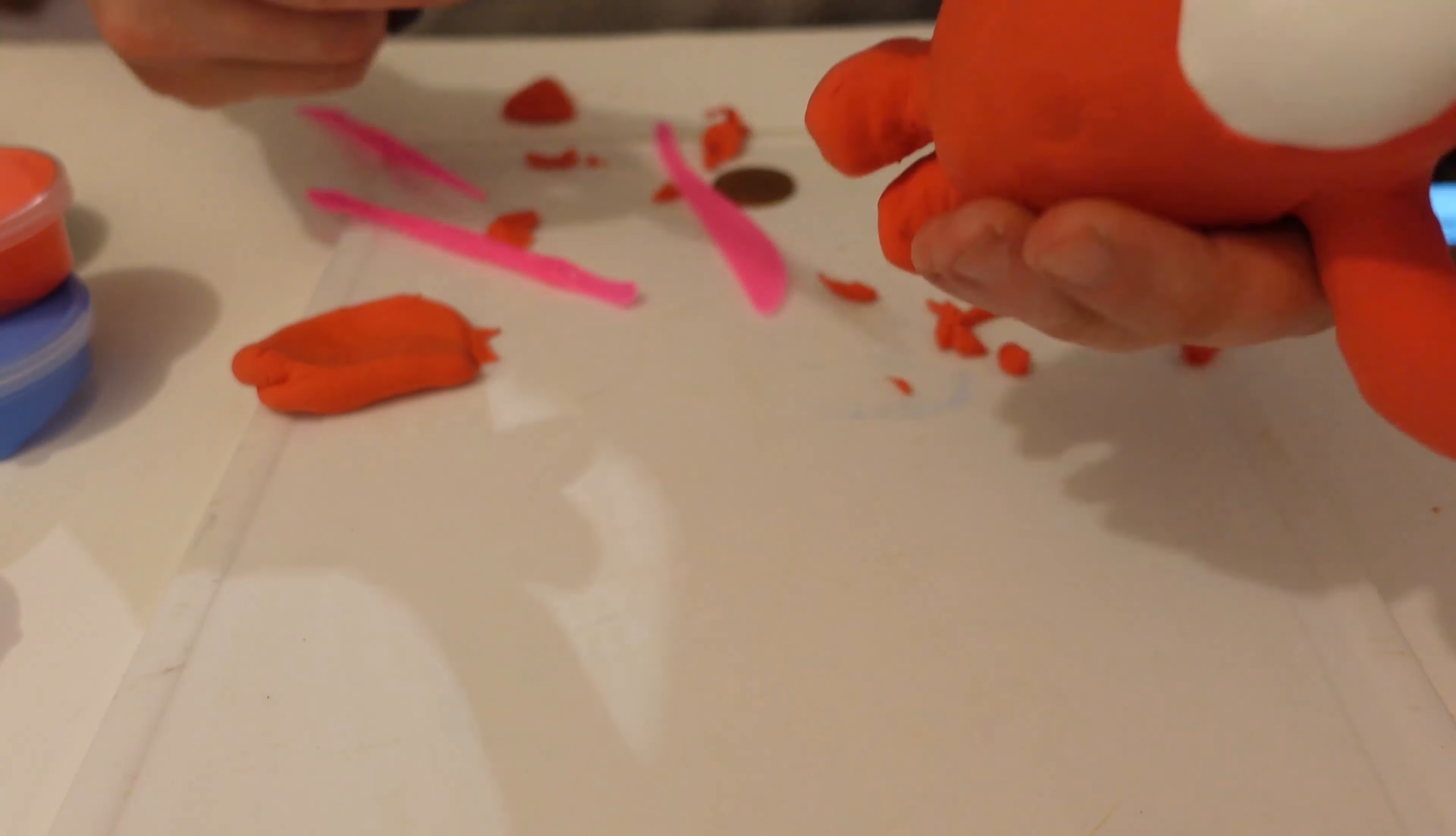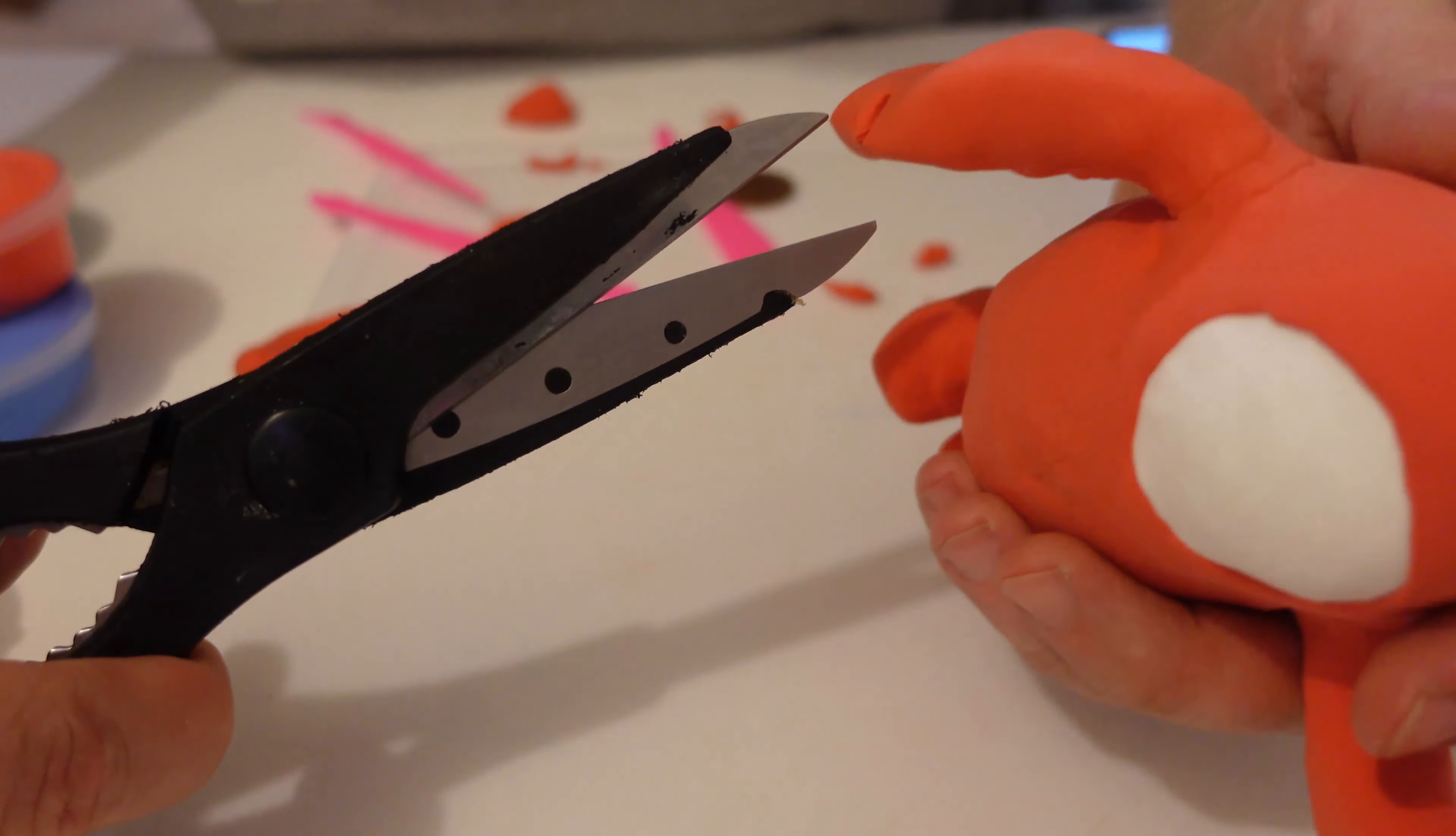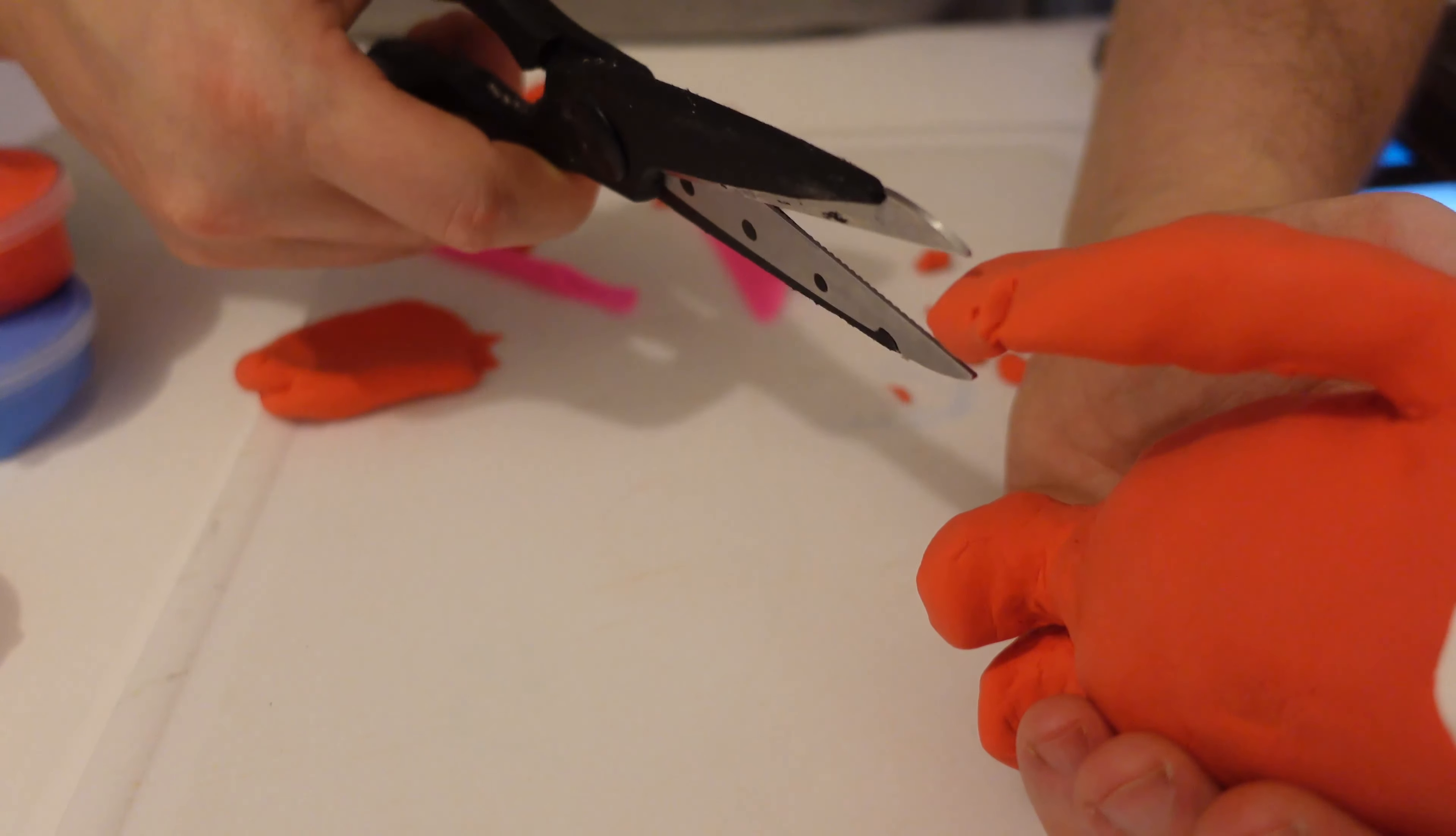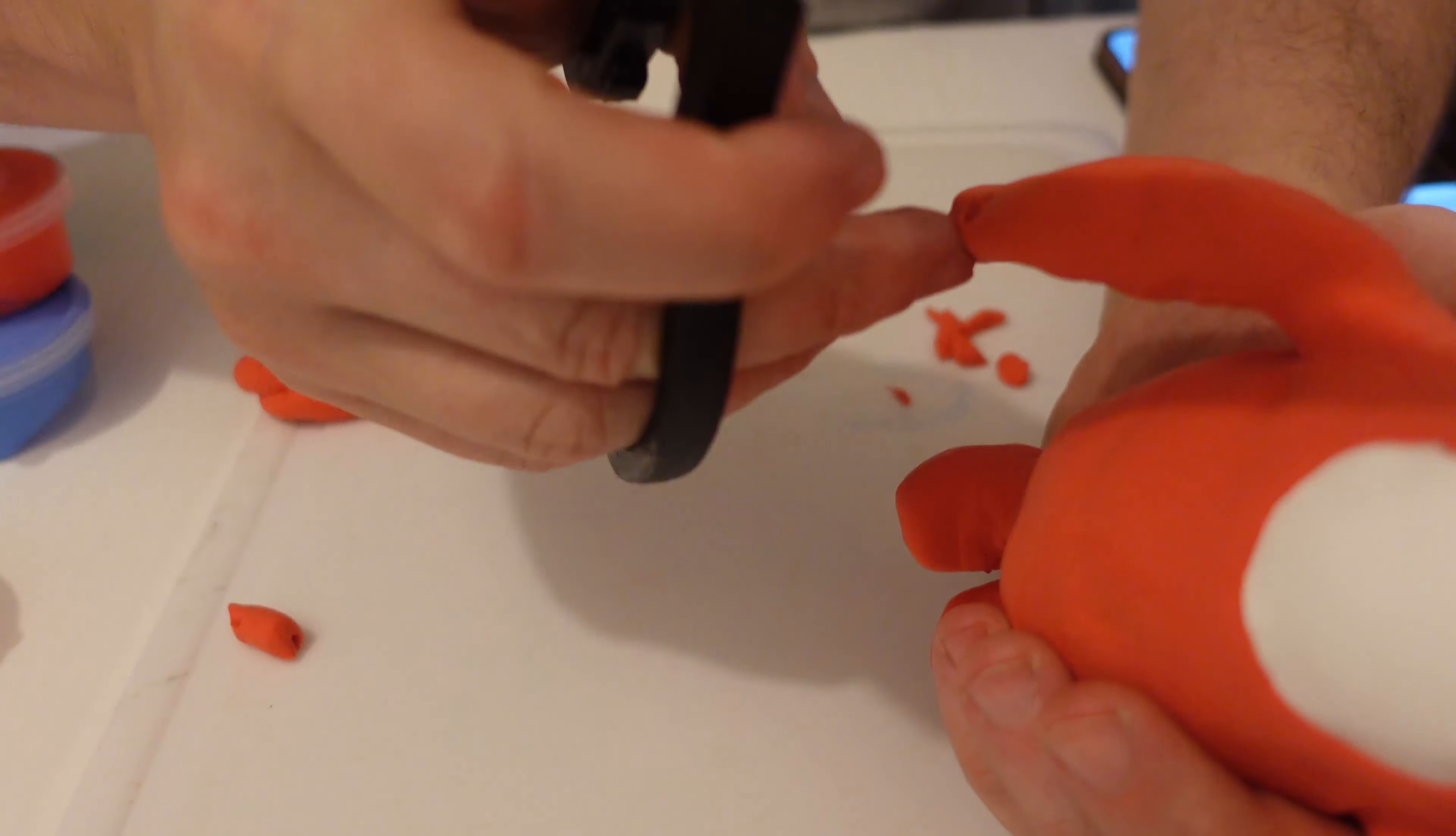Next is the hands. With a pair of scissors, take your time with this. We want to be cutting three fingers and a thumb. The thumb is quite a bit shorter. Cut little triangles out in between each of the digits. That'll give some space and make it easier to pose the hands.